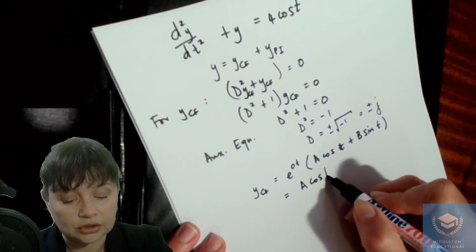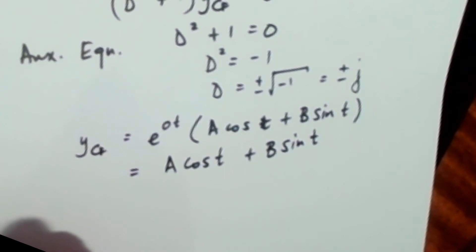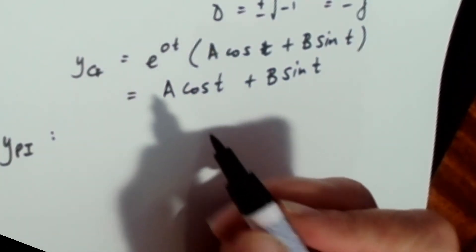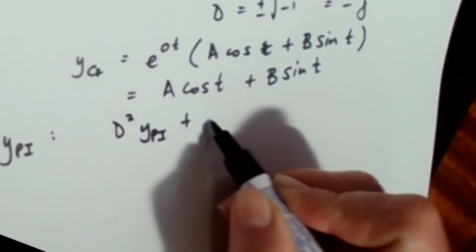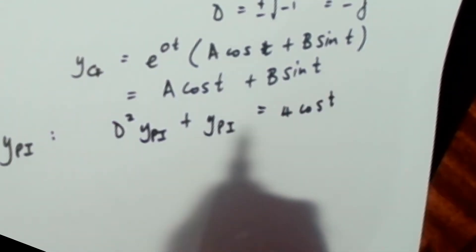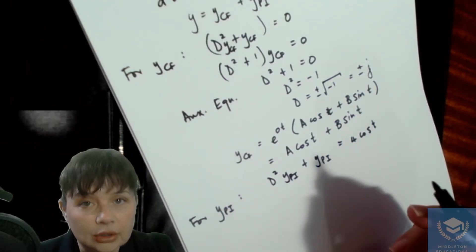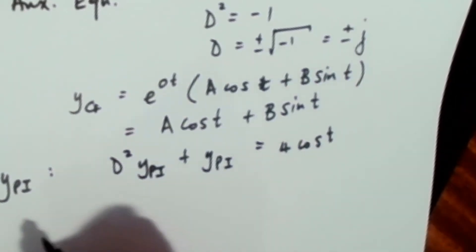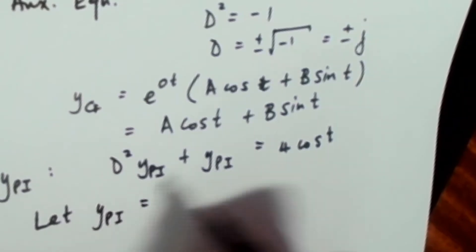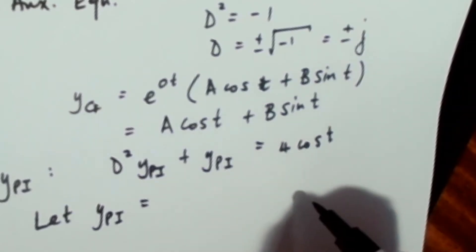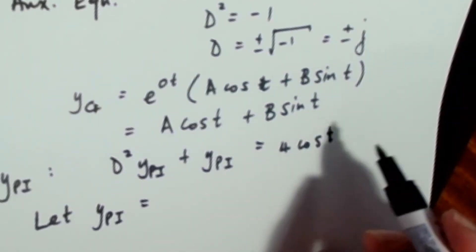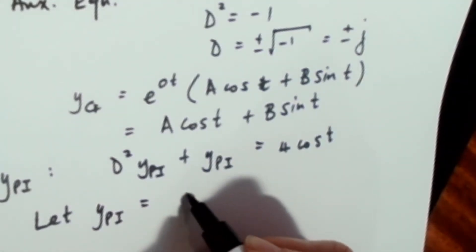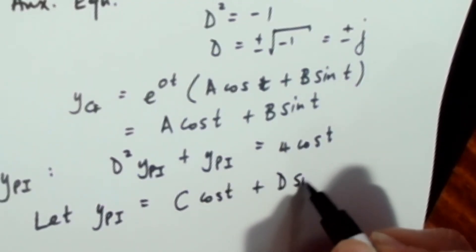So your complementary function is going to look like a cos t + b sin t. Now for our particular integral, we know that d²y_pi + y_pi has to equal 4 cos t. So we need to choose a particular integral such that when you find its first and second derivatives and substitute in, the equation simplifies down to 4 cos t. Since there's a trigonometric function, your particular integral must be made up of cosine as well as sine, because when you find the derivative of sine or cosine they flip between one another. So let y_pi = c cos t + d sin t.